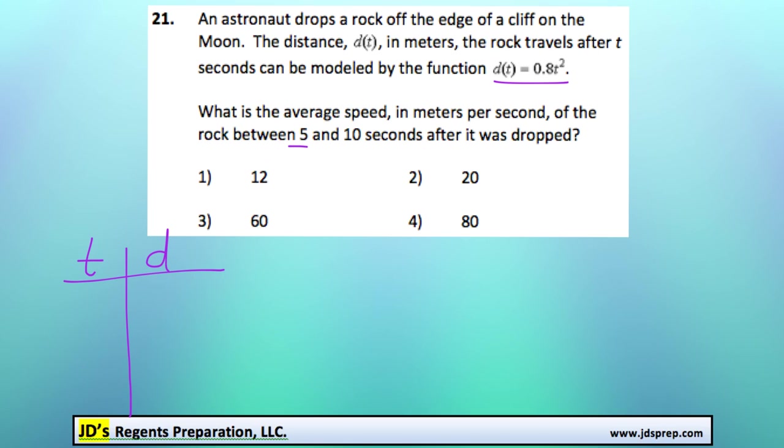And so let's find out what happens after 5 seconds. Let's see how far it's traveled. So d of t is going to be 0.8 times t squared, in this case t is equal to 5.